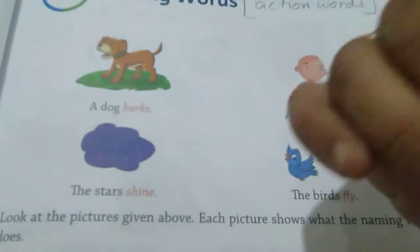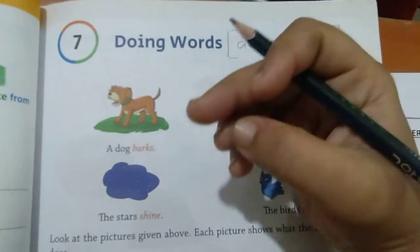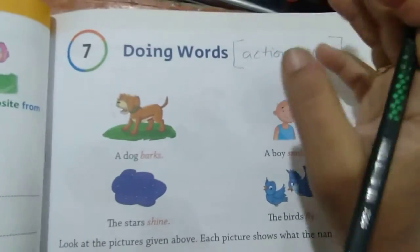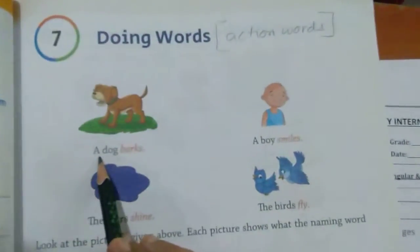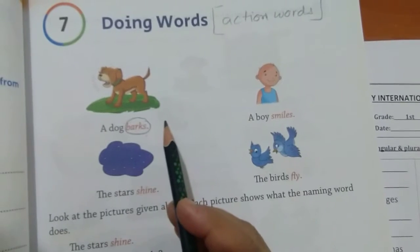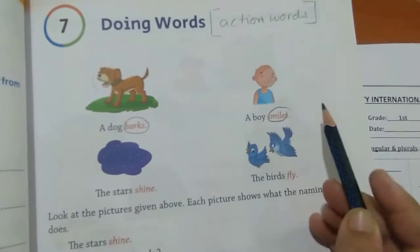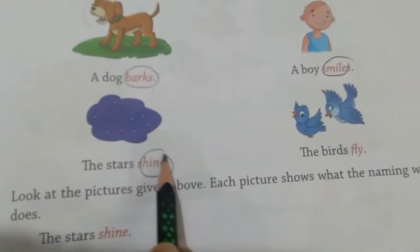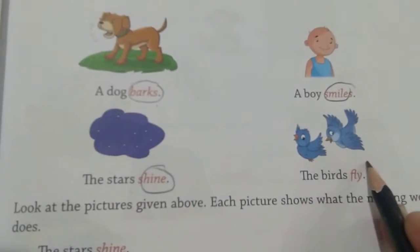For example, 'I am dancing' — so 'dance' is our action word. 'Somya is running' or 'Somya runs' — so 'runs' is our action word. 'Bird flies', 'dog barks' — barks means bhaukna — so 'barks' is an action word. 'A boy smiles', 'the stars shine' — shines means chamakna, the stars are shining. 'The birds fly' — birds are flying. All of these are action words.